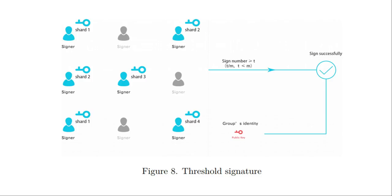Think of it like a landlord. When you rent a house, you're given the keys but the landlord also holds another set. Theoretically, the landlord can come in at any time, but you trust they will not because that's simply not the right thing to do. Similarly, Fusion has the ability to access your private wallet through your private keys should they wish to abuse the system — but of course they won't. This is all hypothetical, but it's still a consideration you need to be aware of.